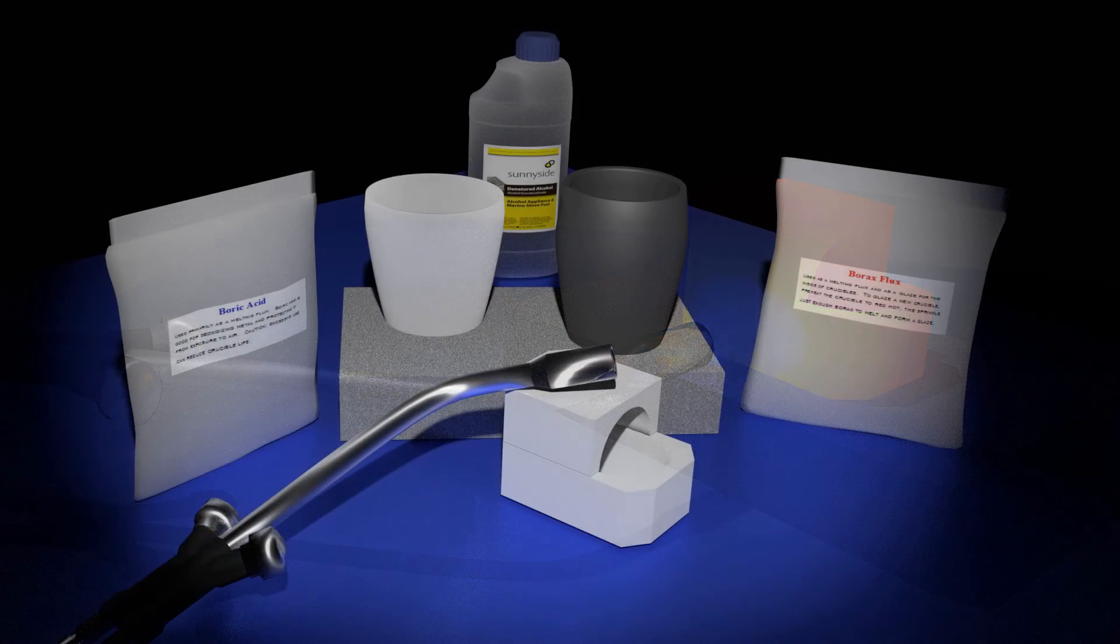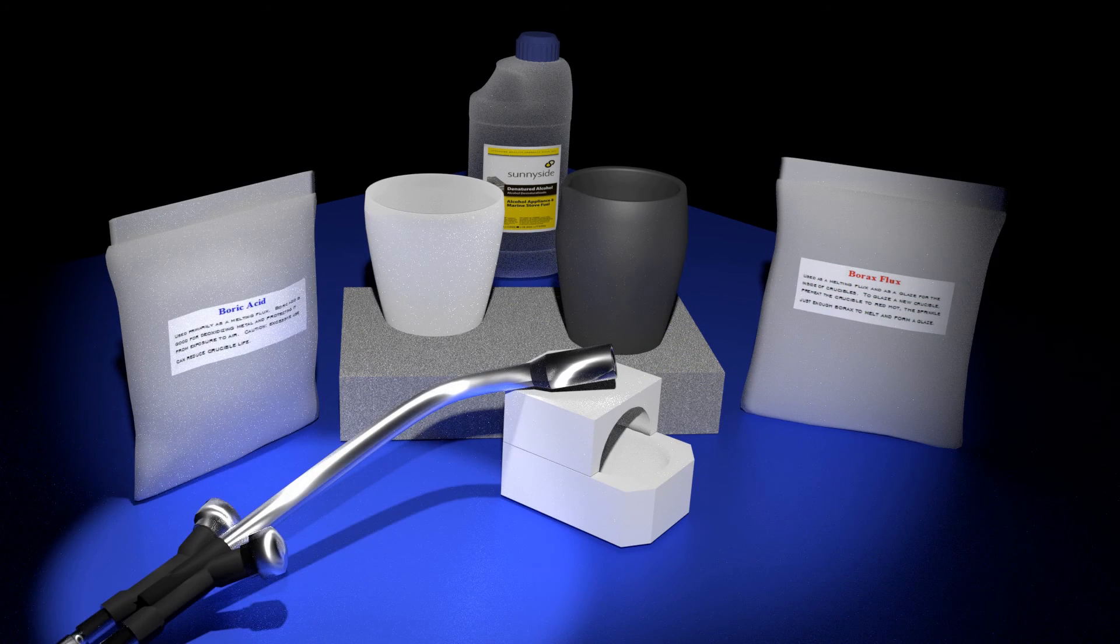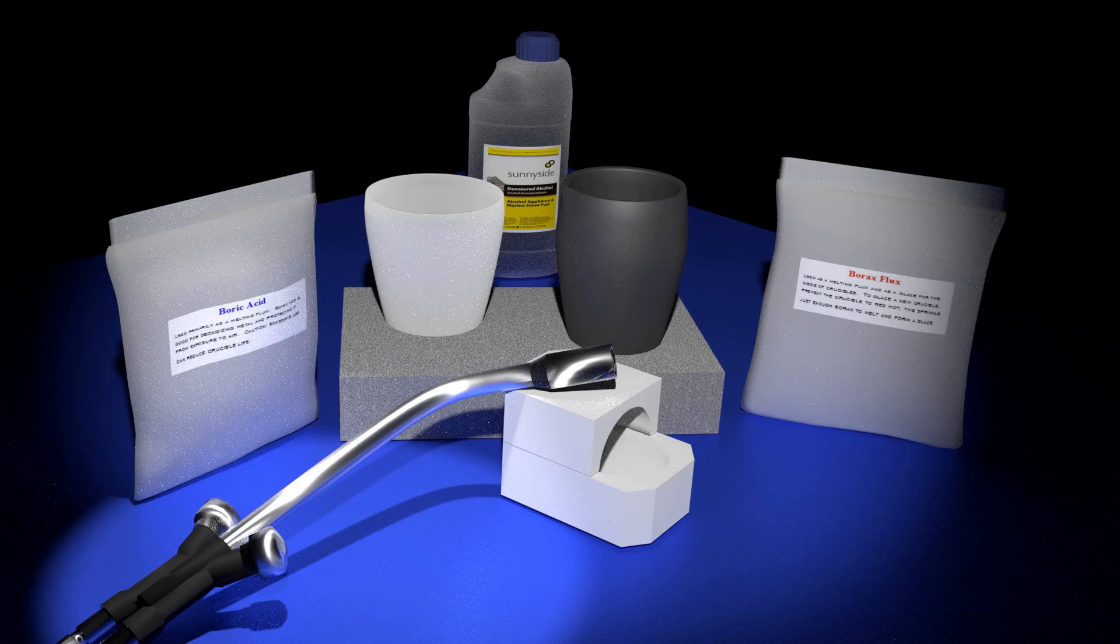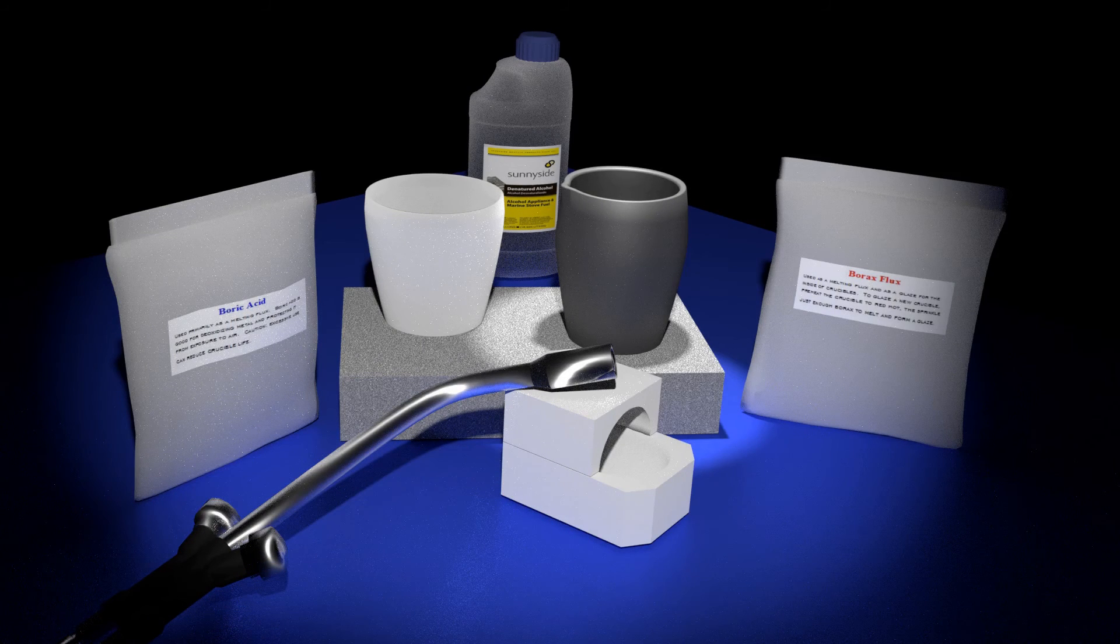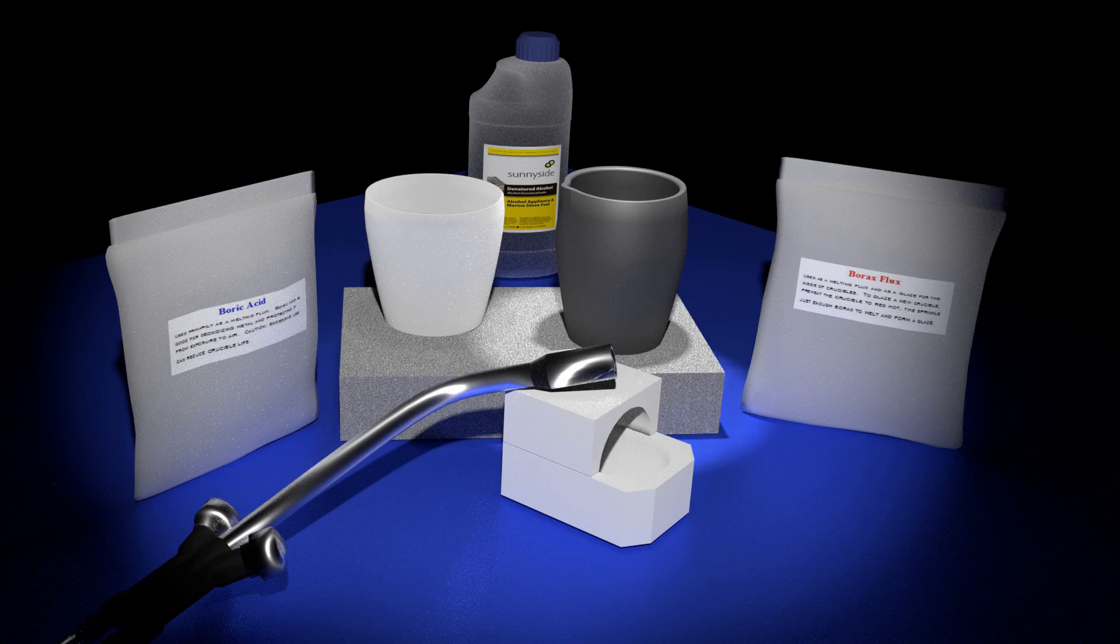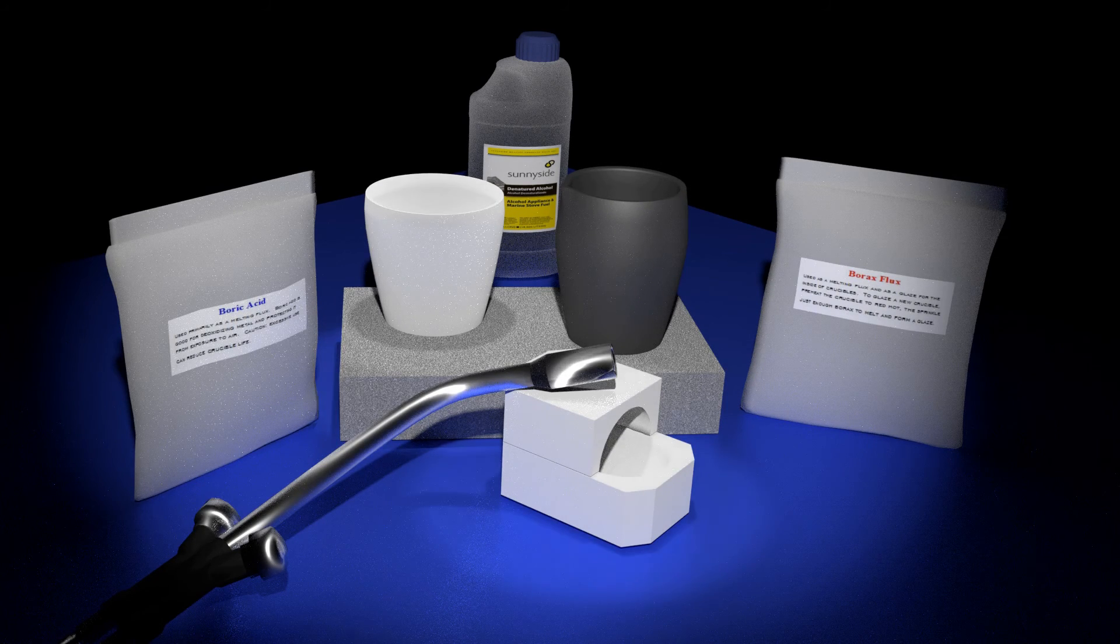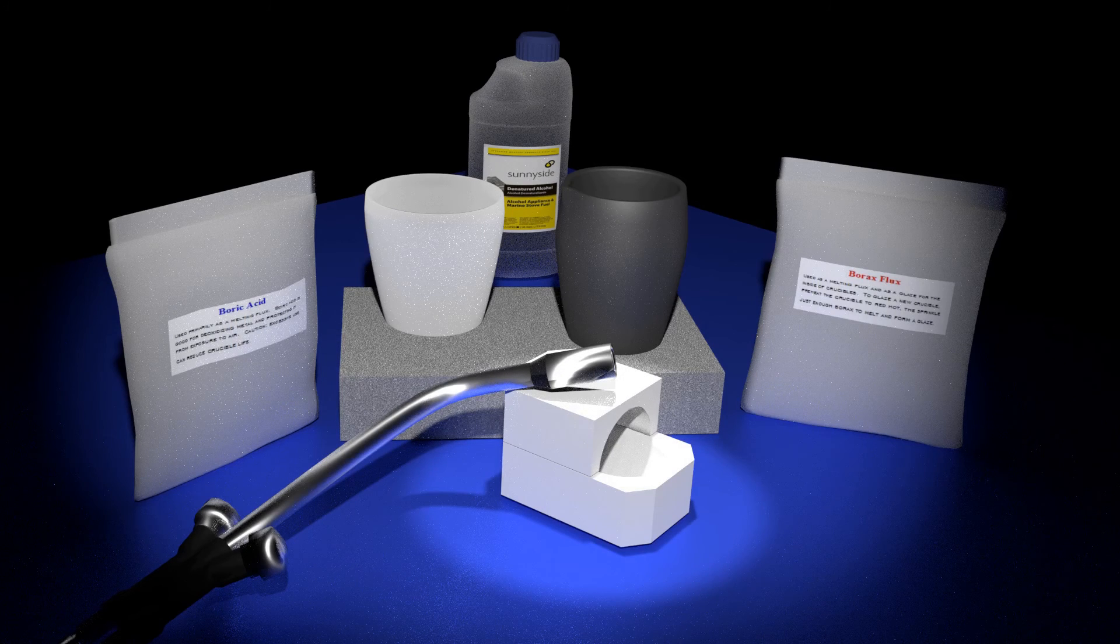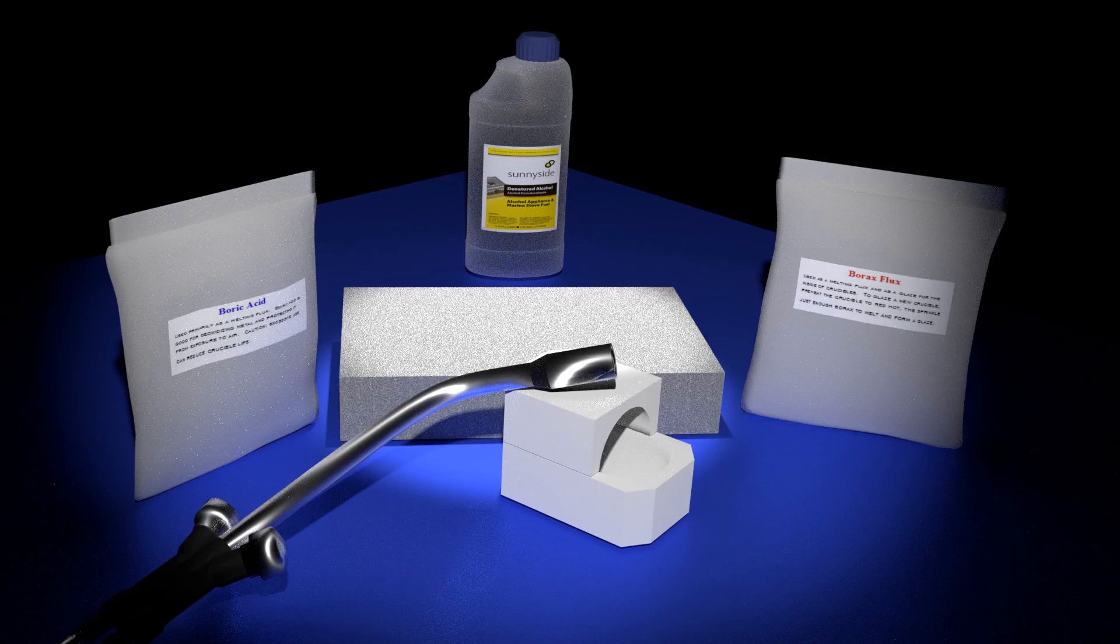Here is what you will need. Melting torch: use a torch made for this purpose. The common propane torch simply will not provide enough BTUs to do the job. Crucible: you can use a standard clay graphite crucible, a ceramic cup shaped crucible, or you can use a ceramic crucible. Crucible rest: any refractory material like a brick or a cinder block, for example, will do the job.